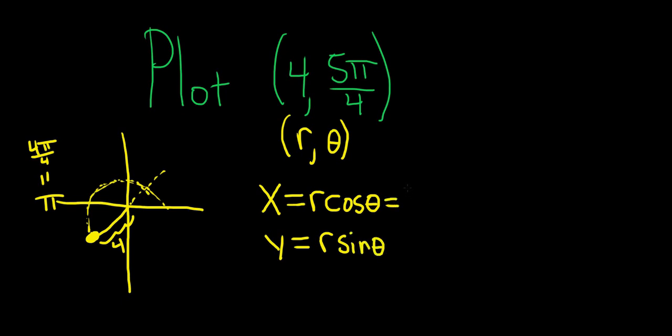So r here is 4. So we have 4 cosine of 5π over 4. So the cosine of π over 4 is the square root of 2 over 2. So 5π over 4 is going to be the same, except we just have to consider whether it's positive or negative. So because we're in quadrant 3 and cosine is the x coordinate on the unit circle, it's going to be negative. So it'll be 4 negative square root of 2 over 2. 2 goes into 4 twice. So this is negative 2 square root of 2.